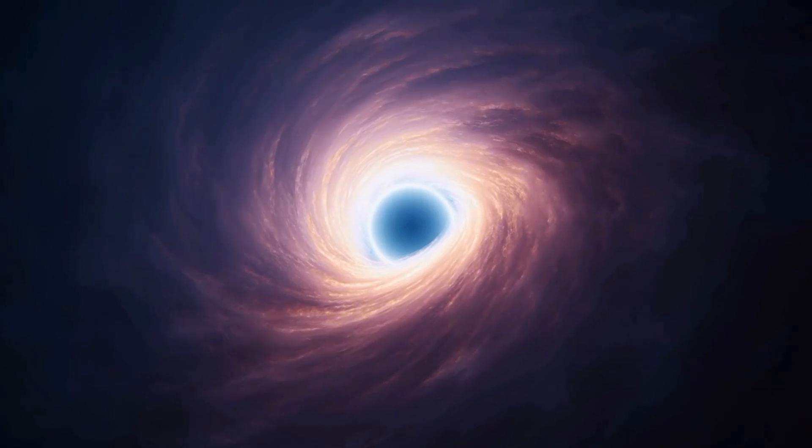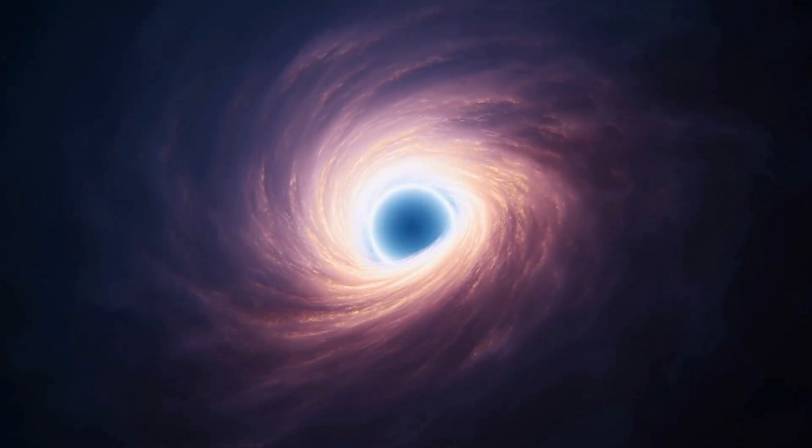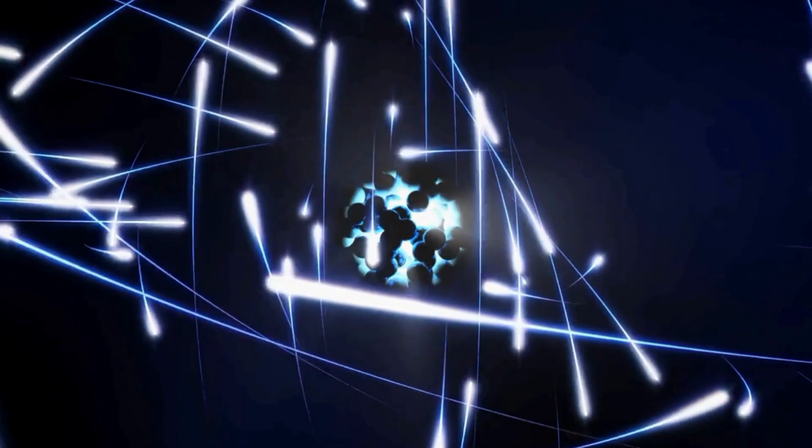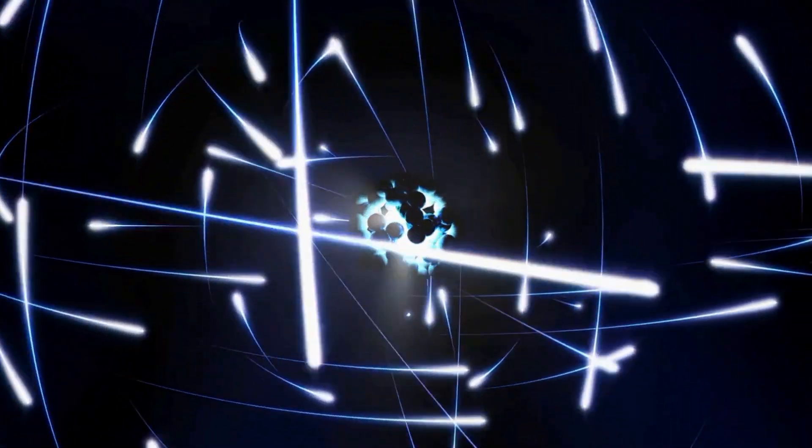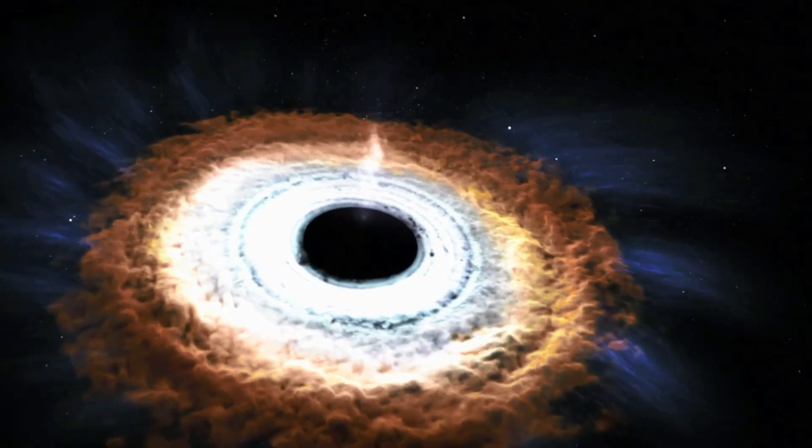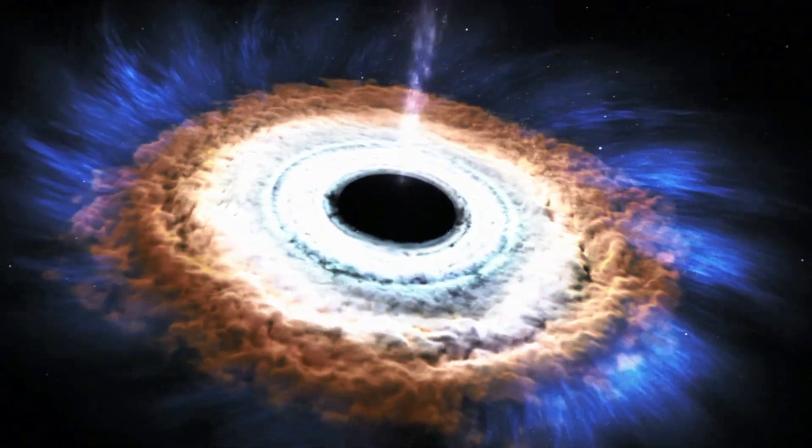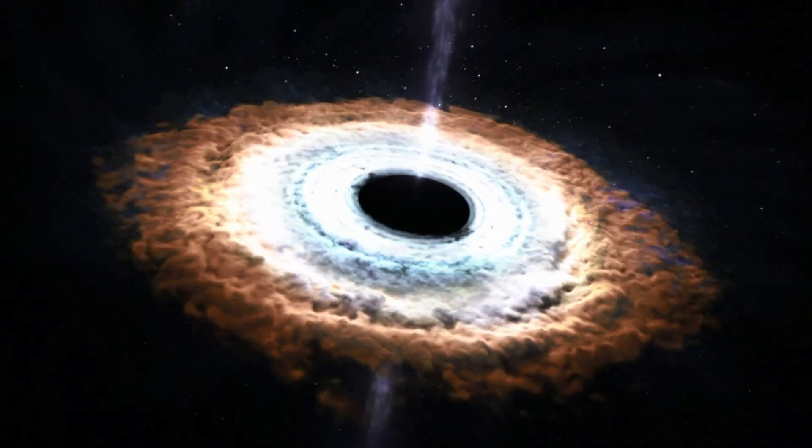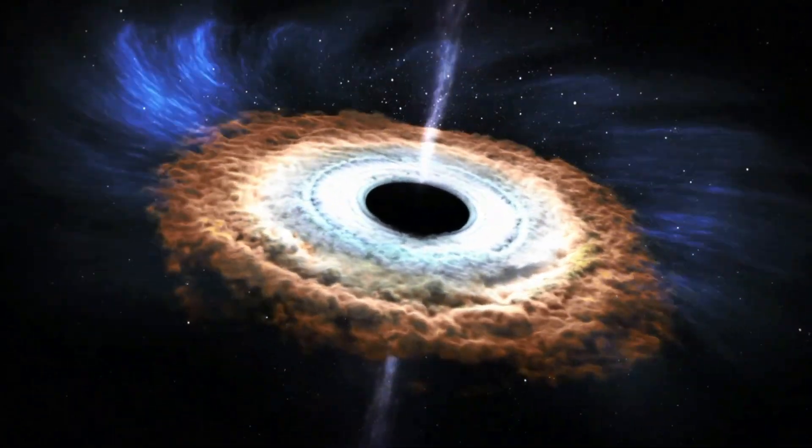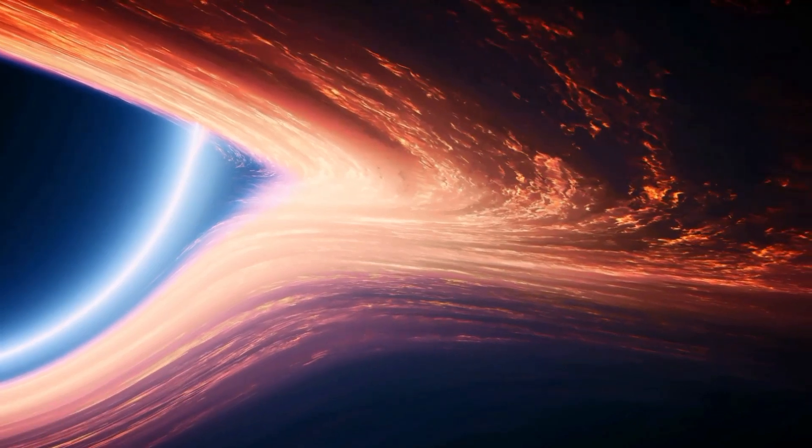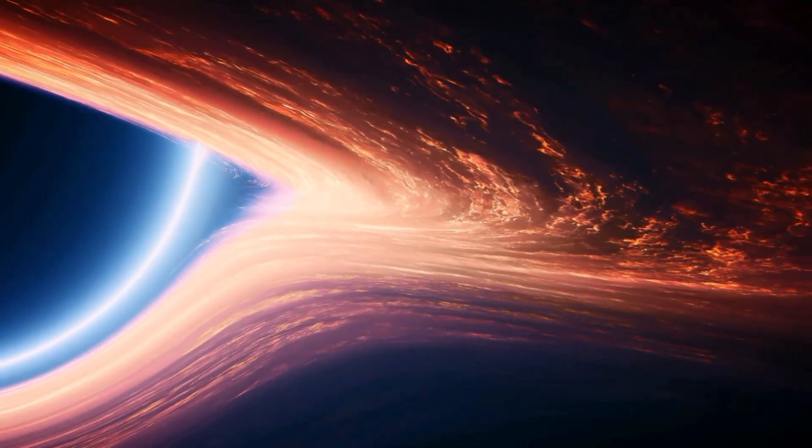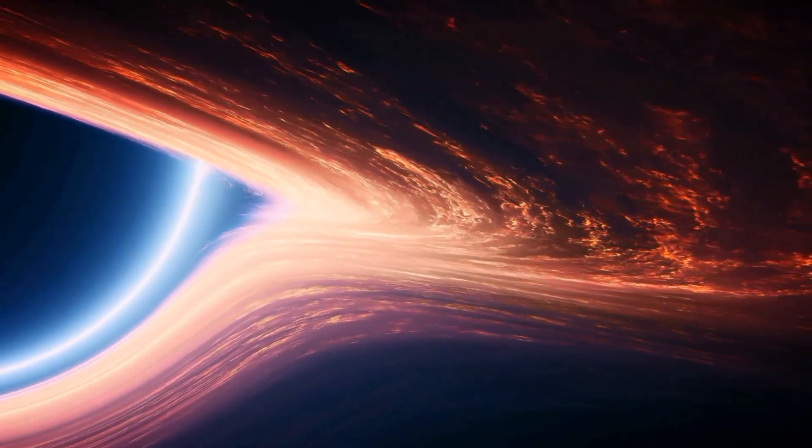The famous physicist Stephen Hawking was fascinated by these tiny black holes. He studied how they behave according to quantum mechanics, the rules that govern the smallest particles. He found out that black holes are not completely black, but can emit radiation and lose mass over time. This is called Hawking radiation. He also realized that big black holes would take longer than the age of the universe to evaporate, while small black holes could have already vanished or be vanishing right now.